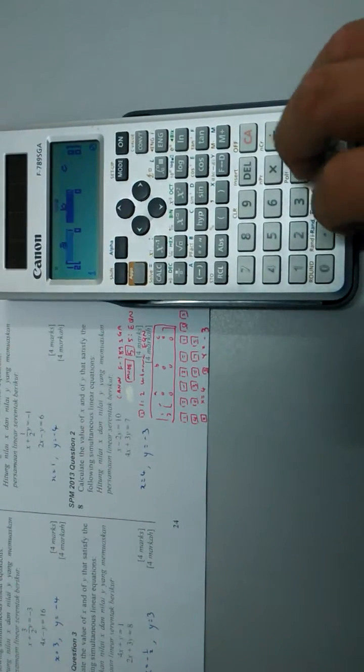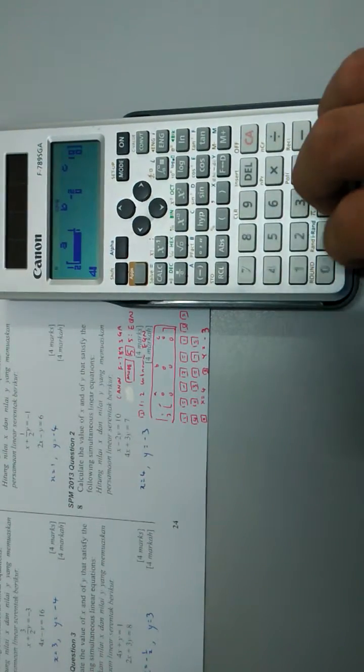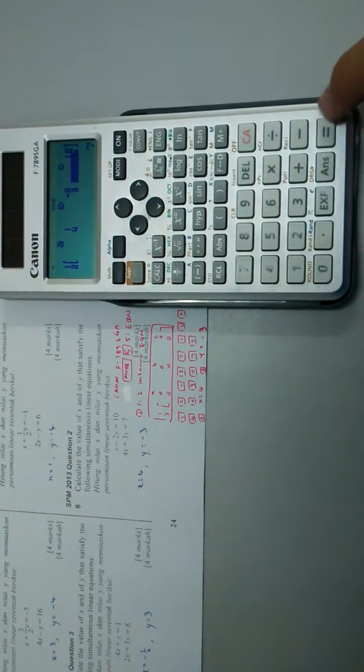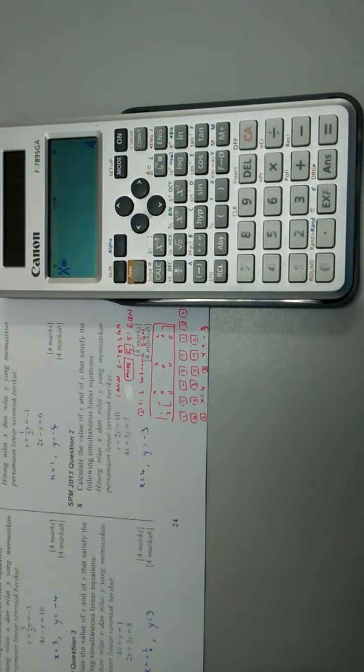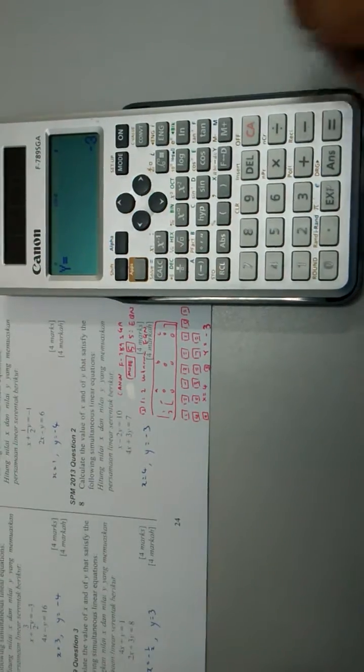So it's 1, -2, 10, 4, 3, 7. After I key in all of this, I press equal again and it will return x equals 4, and equal again for y equals -3.